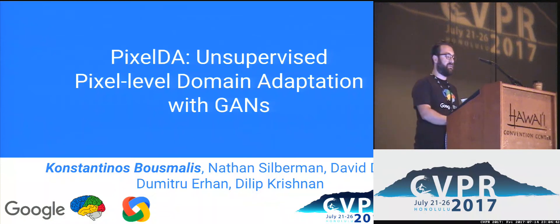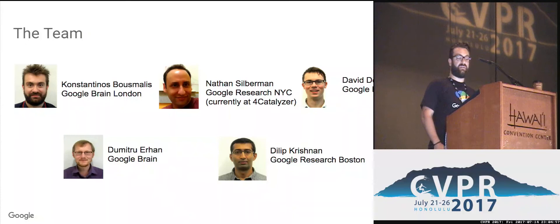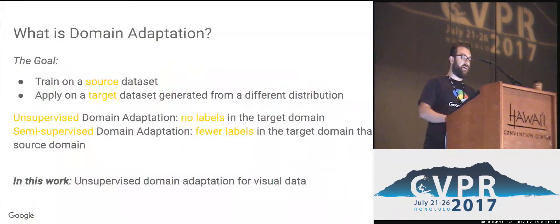My name is Konstantinos Bousmalis, I'm from Google Brain, and I will talk to you today about PixelDA, a framework for unsupervised pixel-level domain adaptation with generative adversarial neural networks. This is work that we did at Google Research and Google Brain, together with Nathan Silberman, David Dohan, Dmitry Erhan, and Dilip Krishnan.